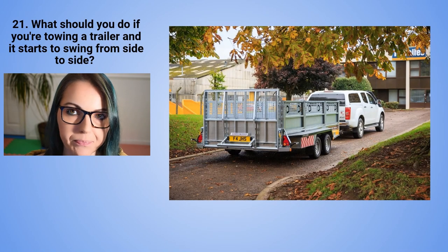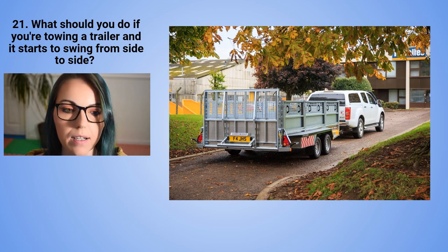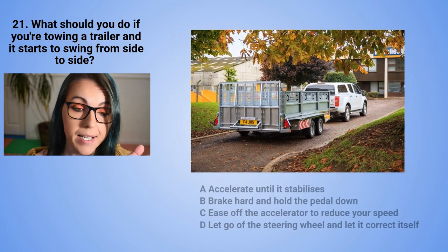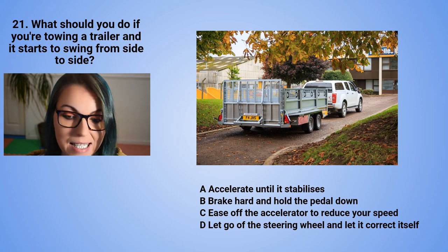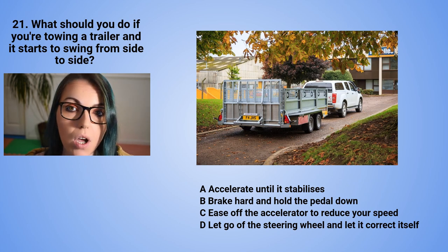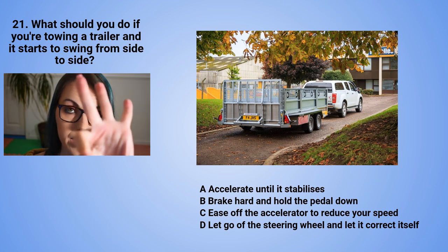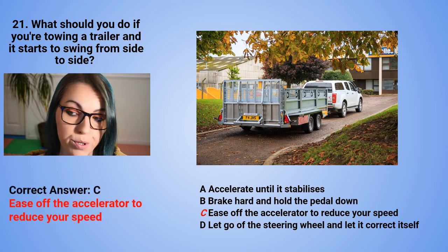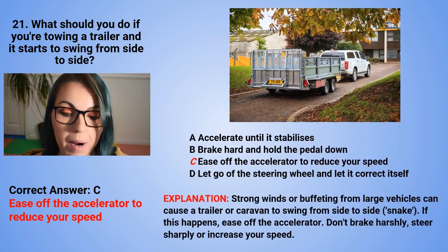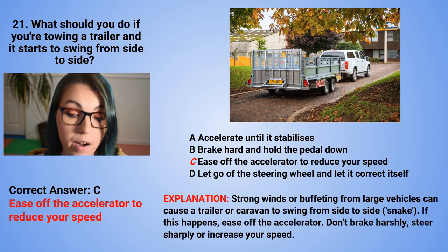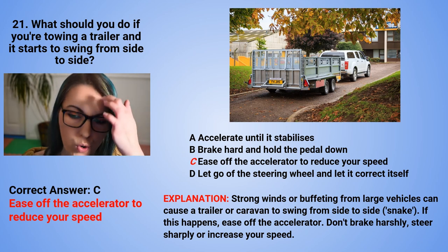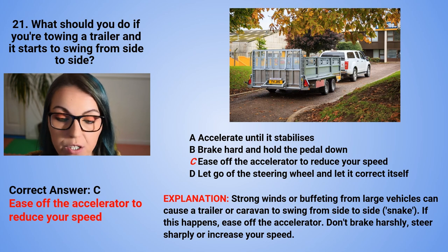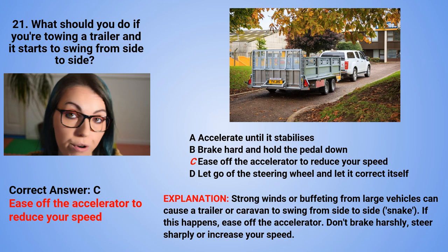Question 21: What should you do if you are towing a trailer and it starts to swing from side to side? A. Accelerate until the trailer stabilises. B. Brake hard and hold the pedal down. C. Ease off the accelerator to reduce your speed. Or D. Let go of the steering wheel and let it correct itself. The correct answer is C — ease off the accelerator to reduce your speed. Strong winds or buffeting from large vehicles can cause a trailer or caravan to swing side to side, also known as snaking. If this happens, ease off the accelerator. Don't brake harshly, steer sharply, or increase your speed.